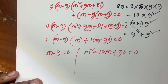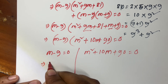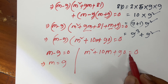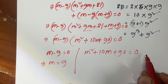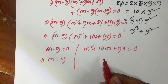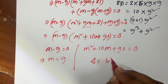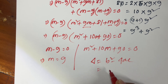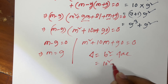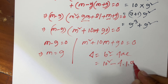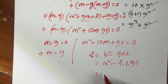Now using the discriminant formula b squared minus 4ac: b equals 10, so 10 squared minus 4 times a equals 1, times c equals 90. That gives 100 minus 360.